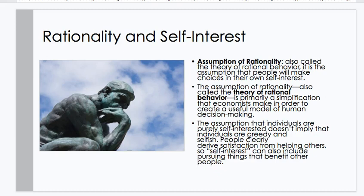Rationality and self-interest. The assumption of rationality — also called the theory of rational behavior — is the assumption that people will make choices in their own self-interest. It is primarily a simplification that economists make in order to create a useful model of human decision-making. The assumption that individuals are purely self-interested doesn't imply that individuals are greedy and selfish. People clearly derive satisfaction from helping others, so self-interest can also include pursuing things that benefit other people.